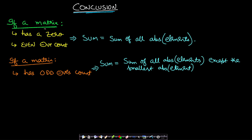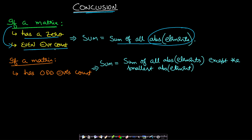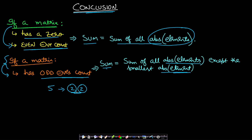Conclusion: if a matrix has at least one 0, the sum equals the sum of absolute values of all elements — all negatives can be removed. If the matrix has an even count of negatives, pairs cancel out and the sum is again the sum of all absolute values. But if the matrix has no 0 and an odd count of negatives, the answer is the sum of absolute values minus 2 times the smallest absolute element, since one negative must remain and we place it on the smallest value.